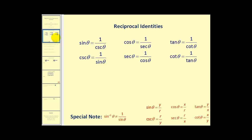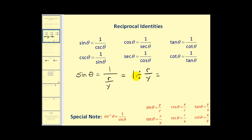Here we have the reciprocal identities. Sine theta is equal to one over cosecant theta, cosine theta is equal to one over secant theta, and tangent theta is equal to one over cotangent theta. We can derive these using sine theta equals y over r, cosine theta equals x over r, and tangent theta equals y over x. For example, since cosecant theta equals r over y, one over cosecant theta is one divided by r over y, which equals one times y over r, giving us y over r — which is sine theta. All the reciprocal identities can be derived in a similar way.